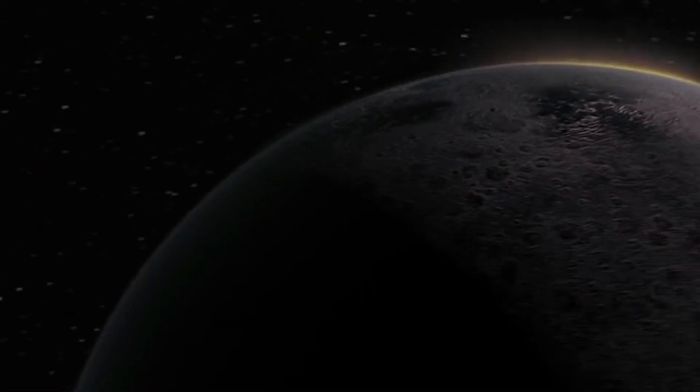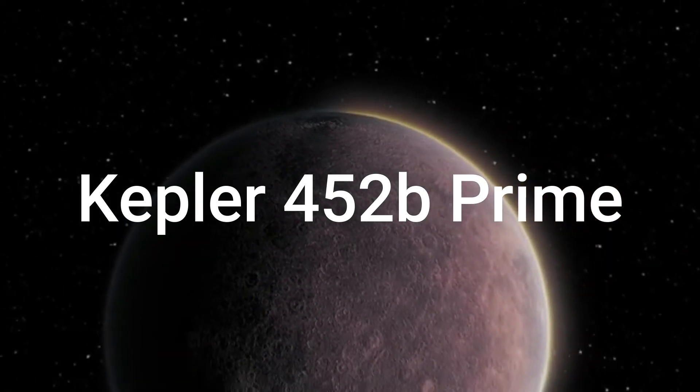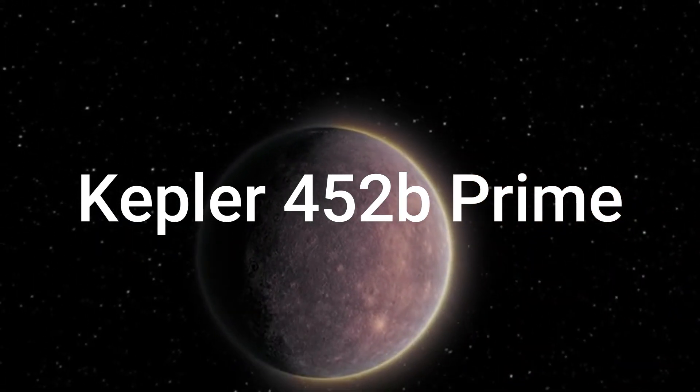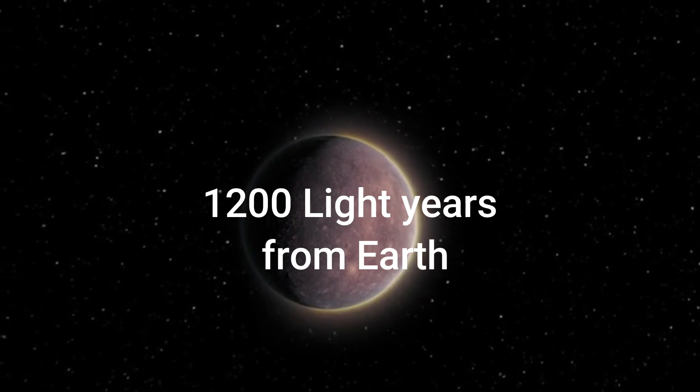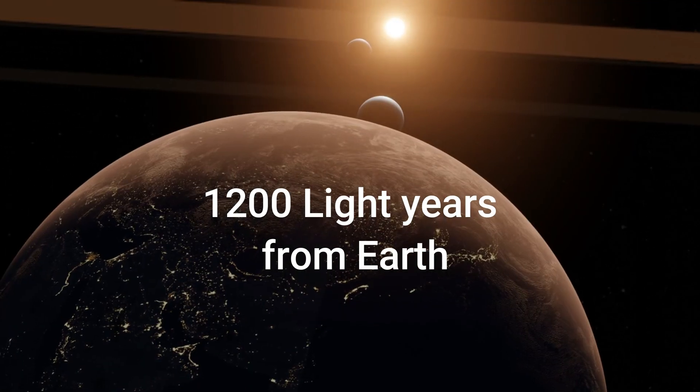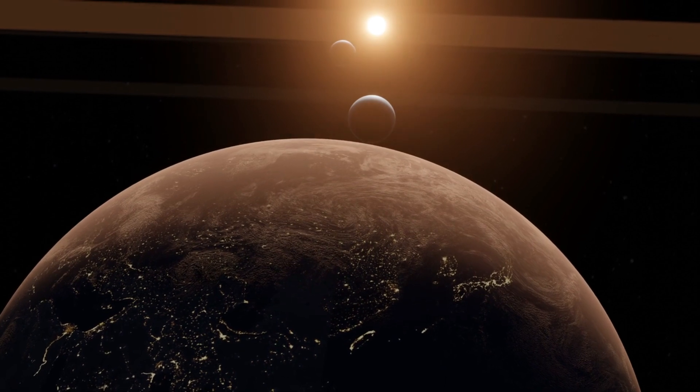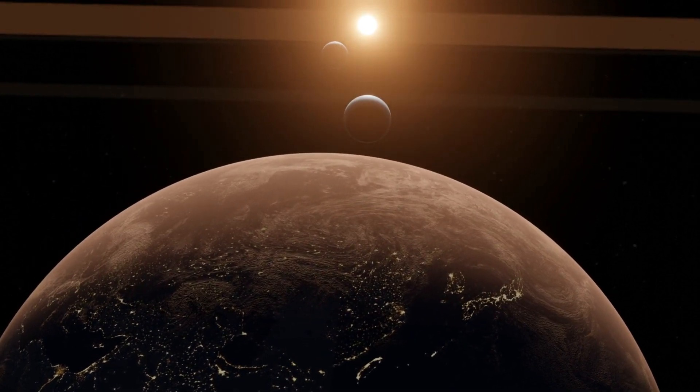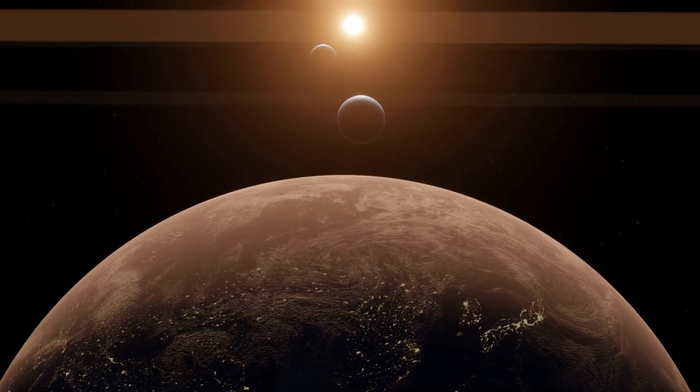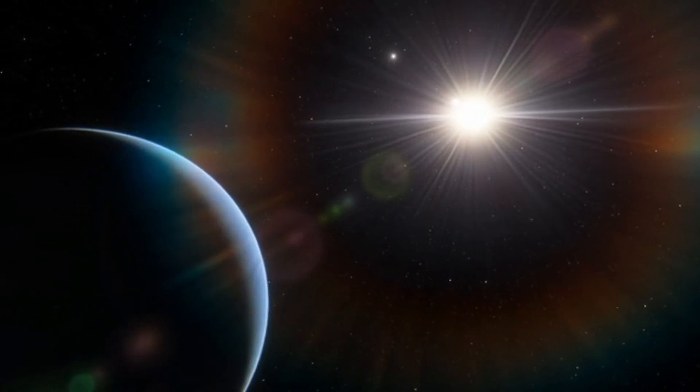One of the standout findings is Kepler-452b, an exoplanet located approximately 1,200 light-years from Earth in a binary star system. Initial atmospheric analyses of Kepler-452b reveal a composition that includes water vapor and oxygen, with potential traces of other life-supporting elements.